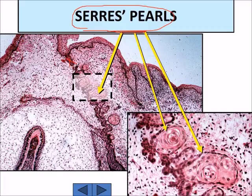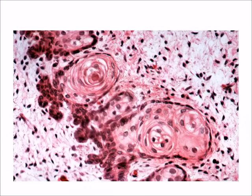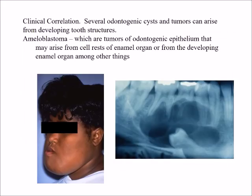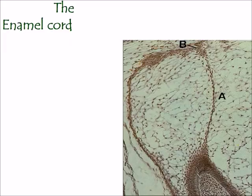The remnants of the dental lamina are called cell rests of Serres. If activated, they may lead to cysts, tumors, or supernumerary teeth. Examples include eruption cysts and tumors seen in the lower jaw. Supernumerary teeth are extra teeth in the jaw.